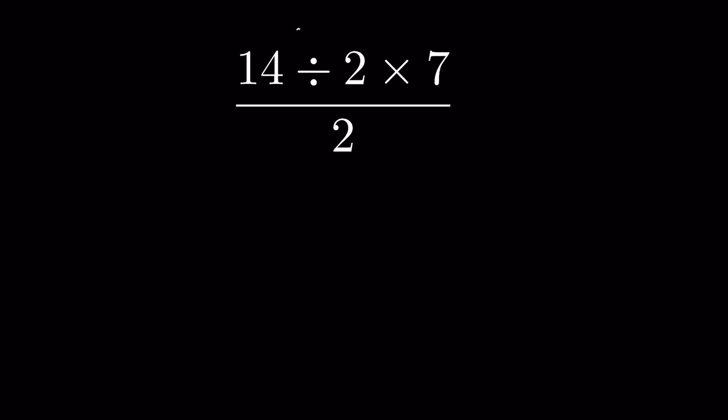From left to right, if you ignore this denominator, we can also write this as 1 upon 2 then parenthesis 14 divided by 2 times 7. Now we have a parenthesis, so 1 upon 2 will be dealt with after parenthesis. Within parenthesis, you also have to follow the left to right rule.